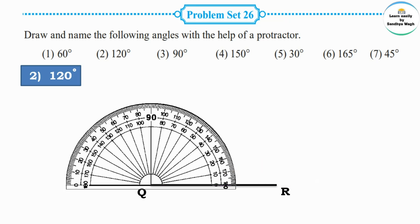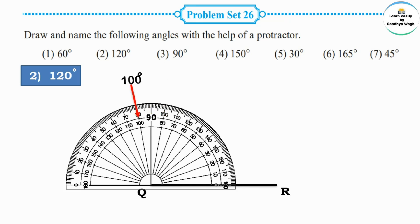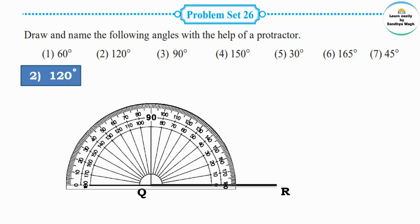Counting from 0 on the right side: 0, 10, 20, 30, 40, 50, 60, 70, 80, 90, 100, 110, and 120. This is the 120 degree marking on the protractor.